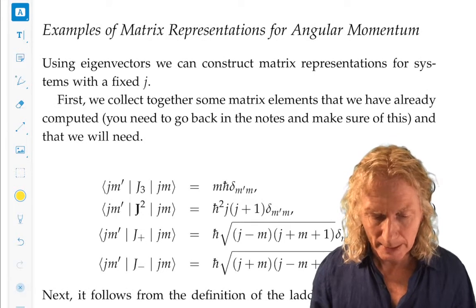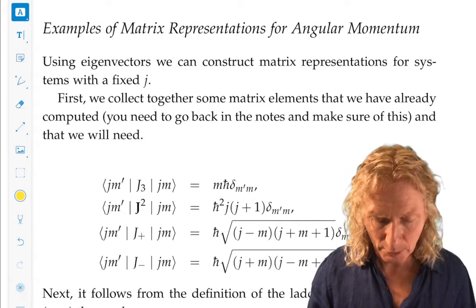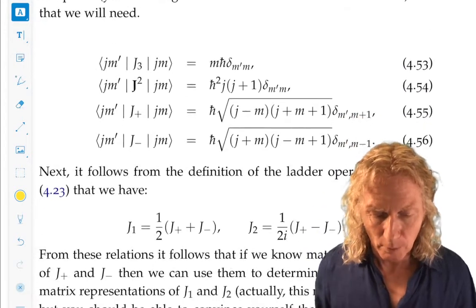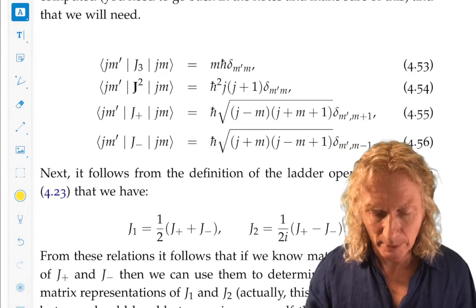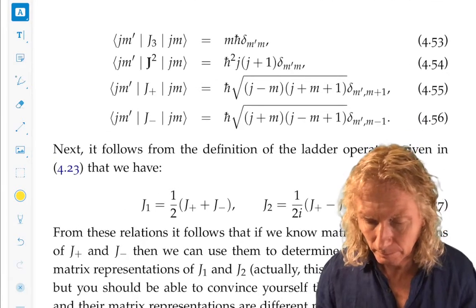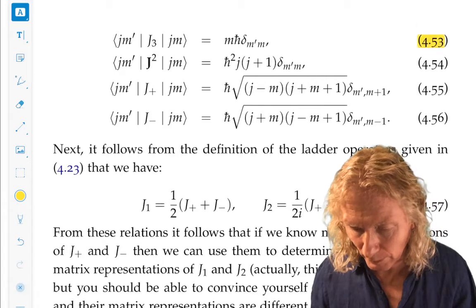Before we get into this, we need to write down a few identities that will be extremely helpful for us in our calculations. These four, 453 through 456.